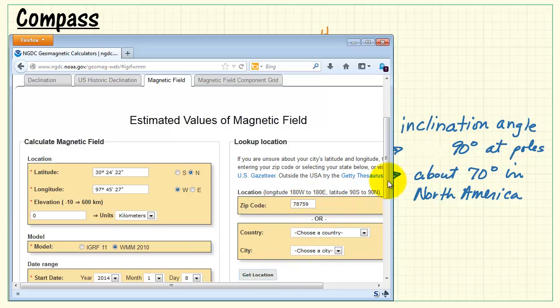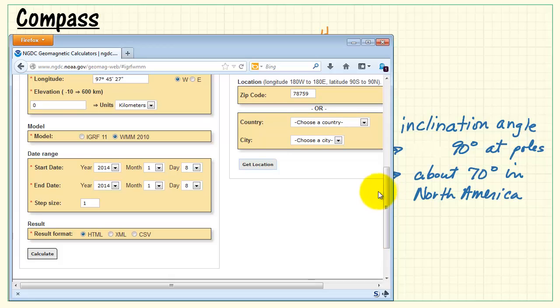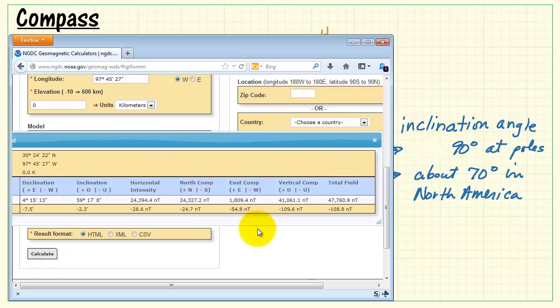And let me try that out with the same location down there in Austin, Texas. And it says that the inclination angle is 59 degrees.